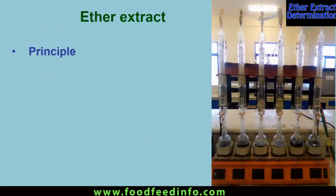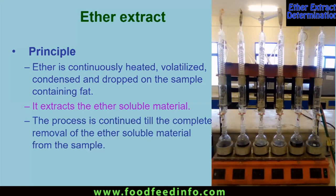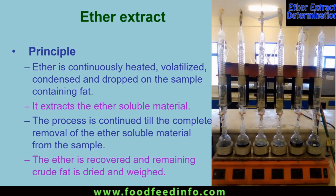What is the principle of ether extraction? Ether is continuously heated, volatilized, condensed, and dropped onto the sample containing fat. It extracts the ether-soluble material from the sample, and the process is continued until the complete removal of ether-soluble material. The ether is then recovered and the remaining crude fat is dried and weighed.